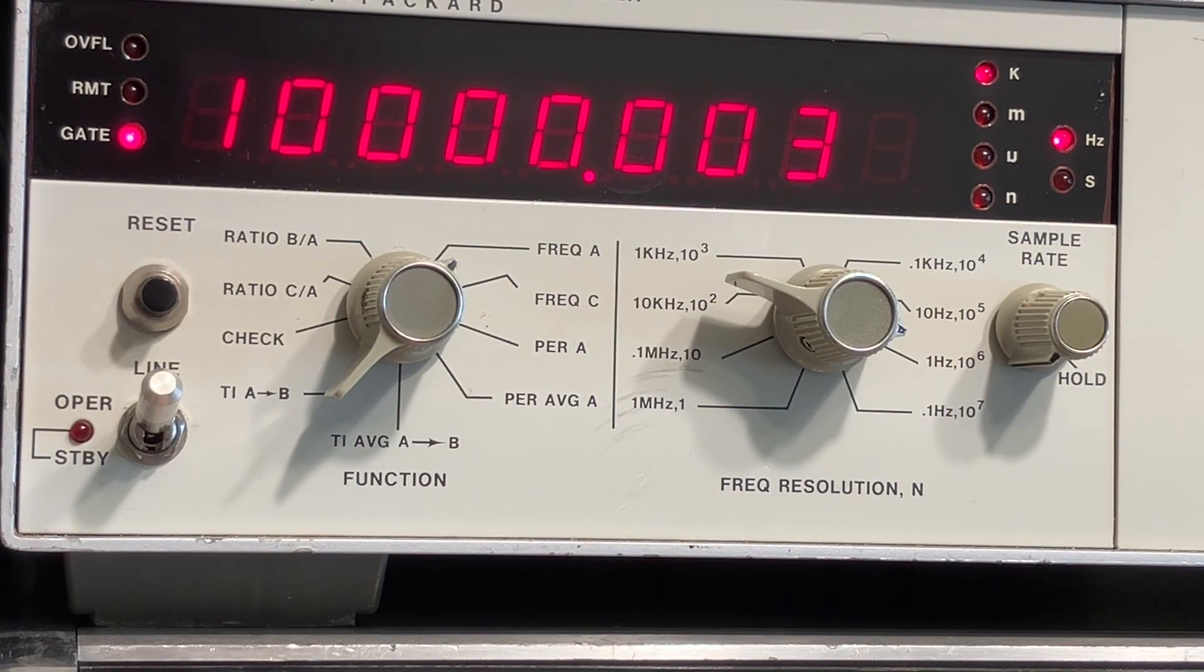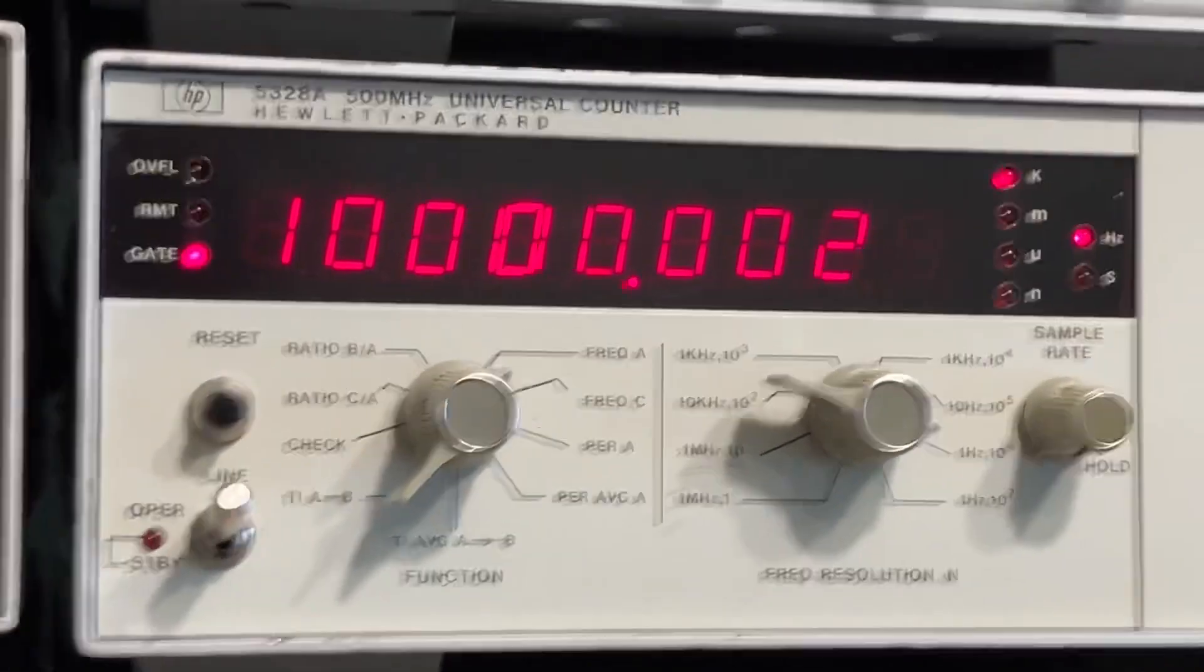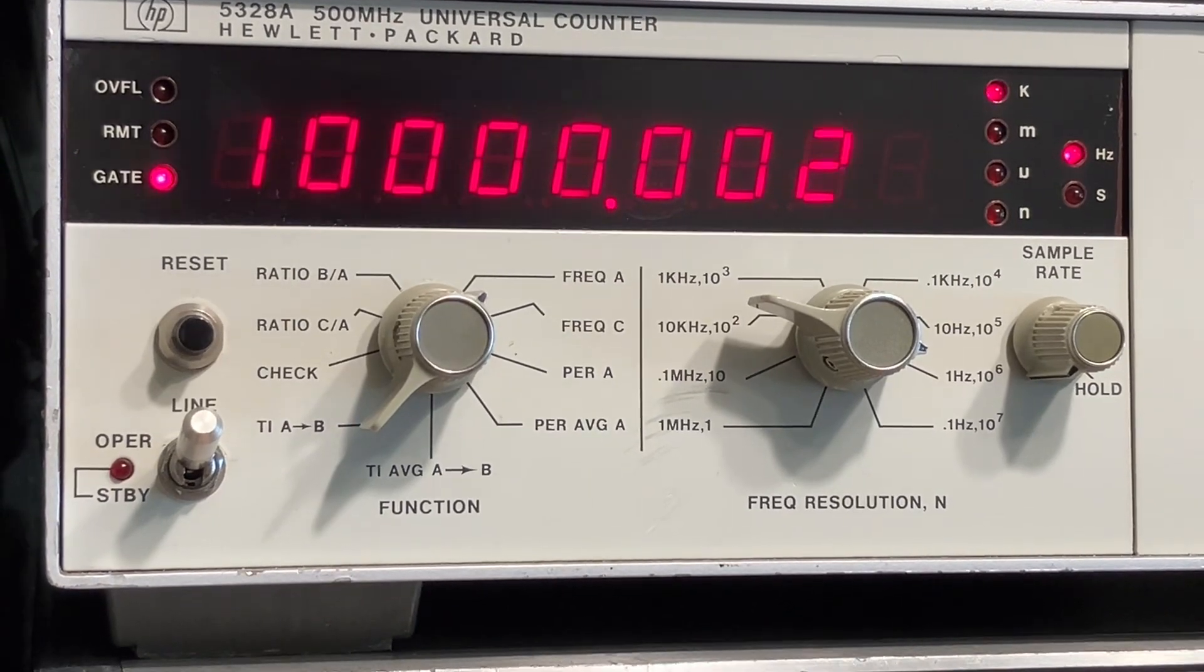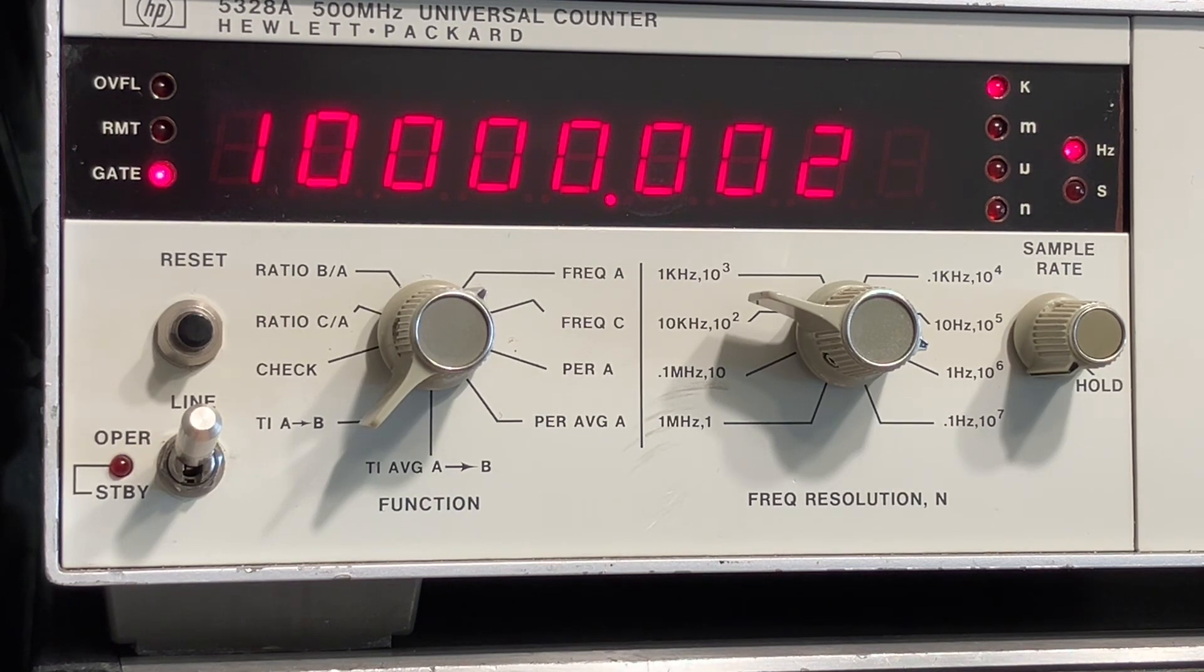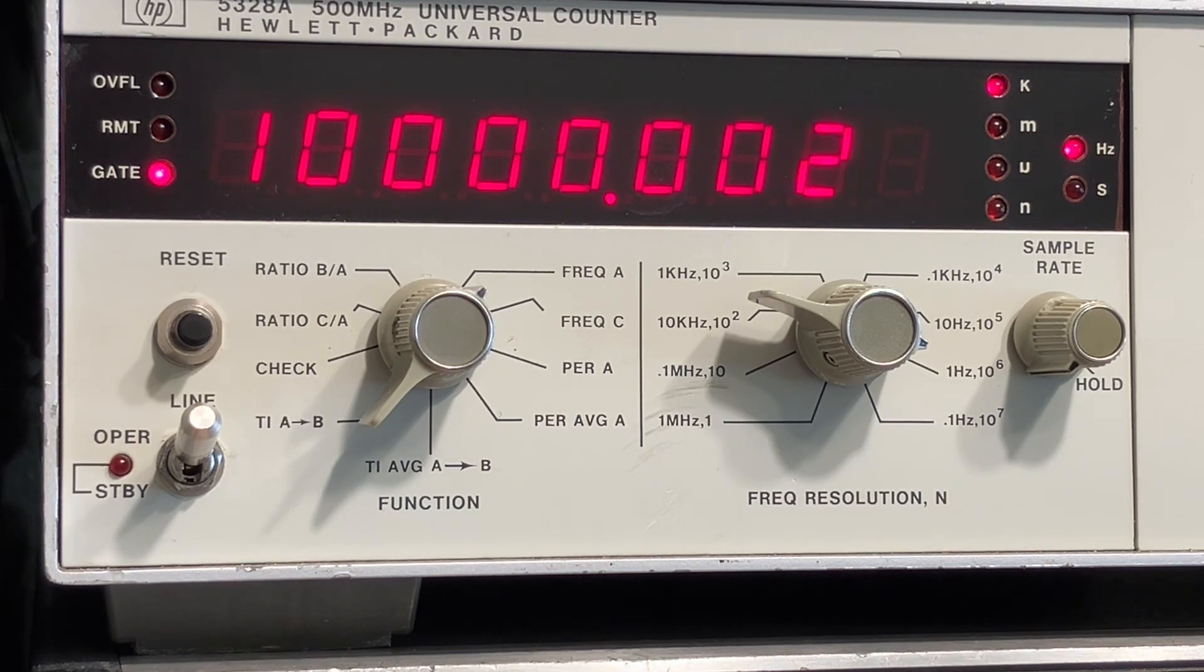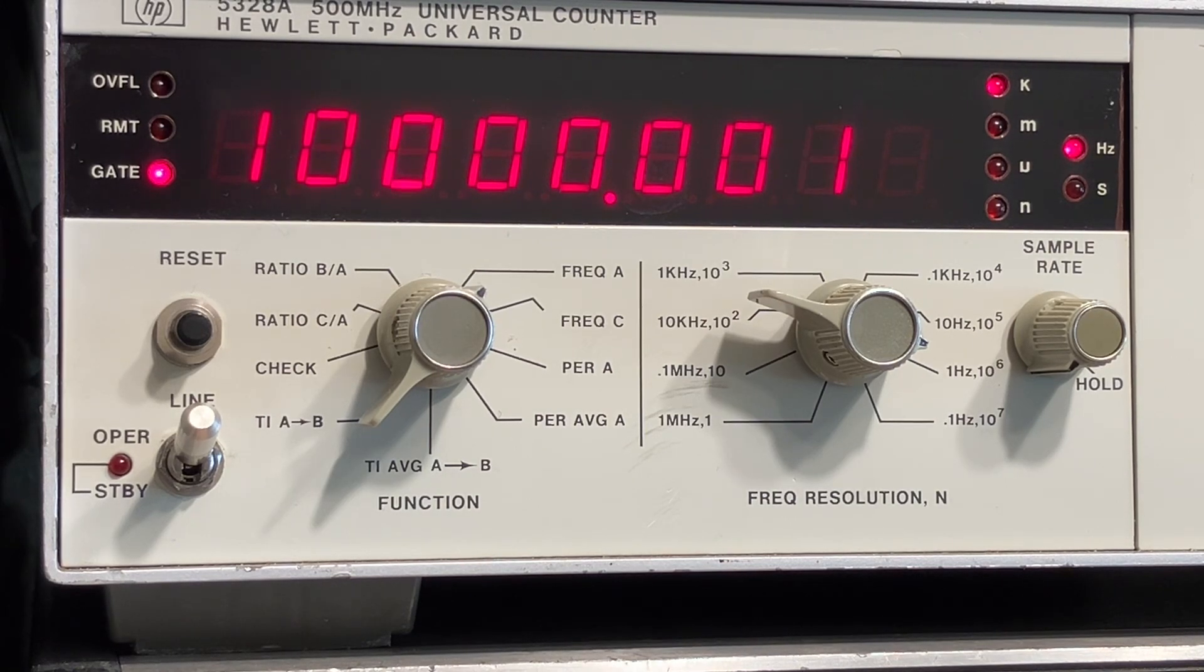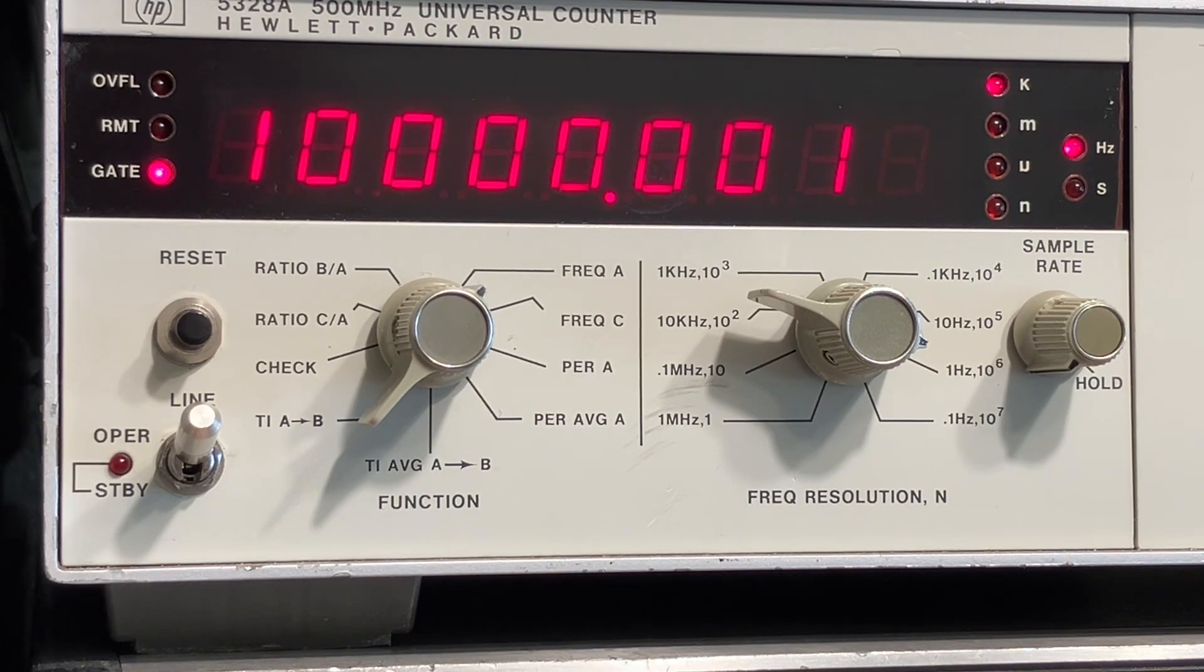So I've connected the 10 megahertz output of the GPSDO to the input of my 5328A frequency counter. Let's see if we can get a better image. And it looks like it's working. We've got a 10 megahertz output. Right now it's reading about two hertz high. The indication on the GPSDO still says alarm, the GPS lock is lit and the run light is flashing. I still don't know what any of those mean. I don't really have instructions that came with this. And if there were instructions, they would be in Chinese anyway. So let's give it a little while and see what happens.